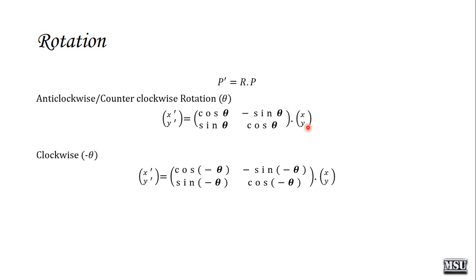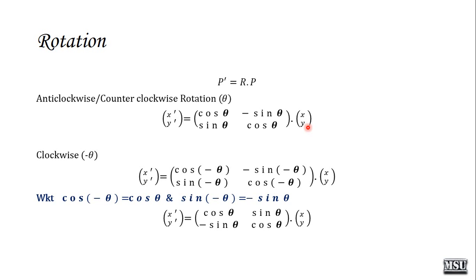For clockwise rotation, substituting minus theta: cos(−theta) = cos theta and sin(−theta) = −sin theta. So the clockwise rotation matrix becomes [cos theta, sin theta; −sin theta, cos theta]. Normally to perform rotation we use the anti-clockwise formula. In a problem, if clockwise rotation is mentioned, use a negative angle — that is the difference between the two.